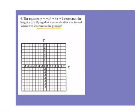So, if you think back to when it returns to the ground, that's when my height is 0. And since y is my height, that's when my y is going to be 0. So, I'm looking at the equation 0 equals negative x squared plus 4x plus 3.